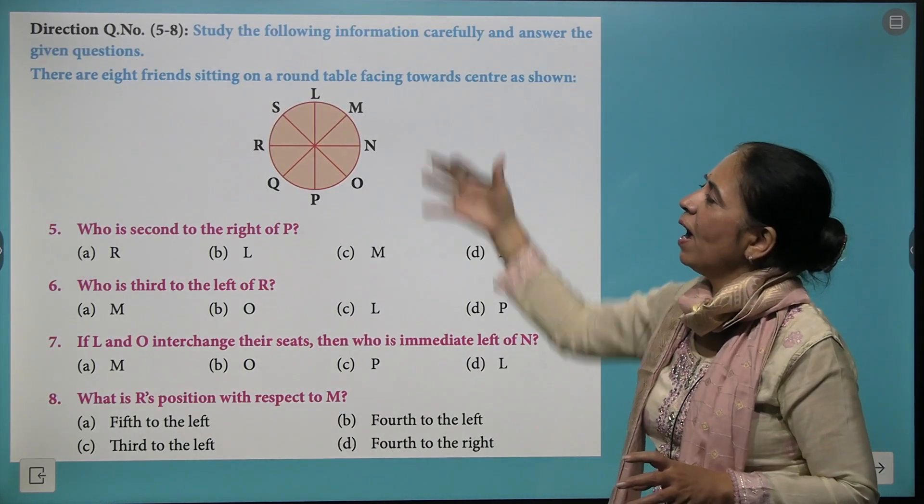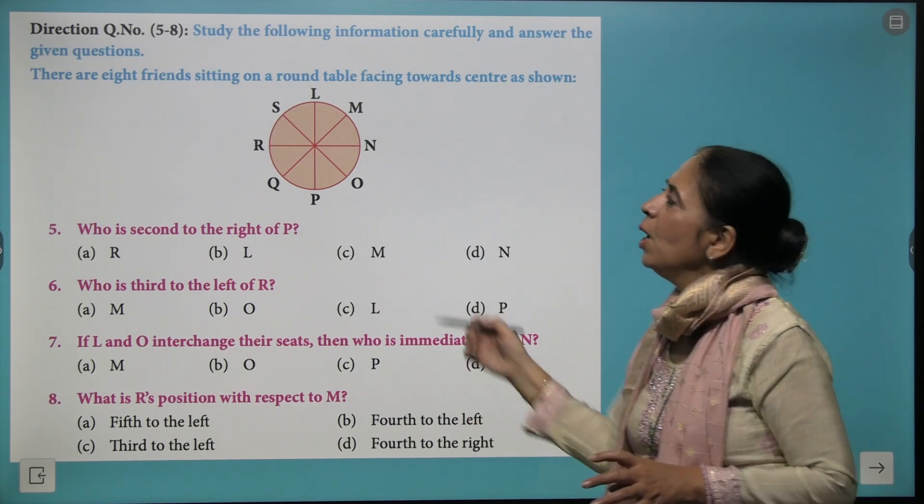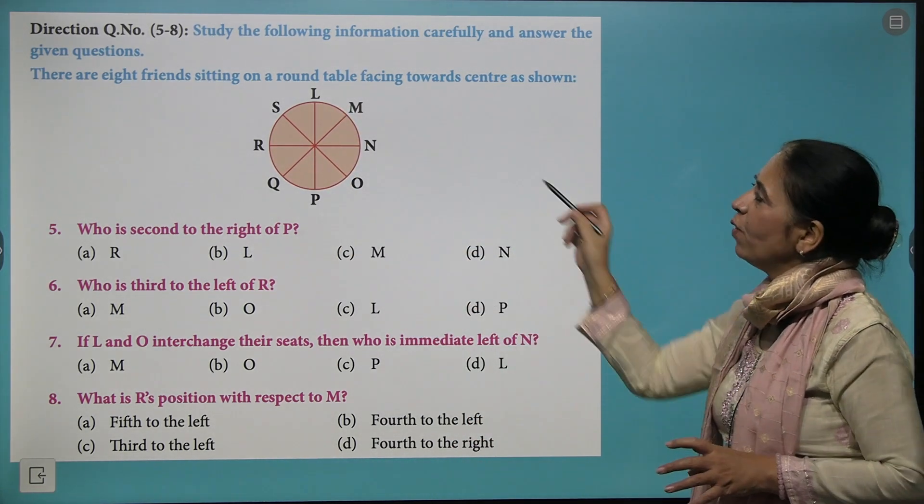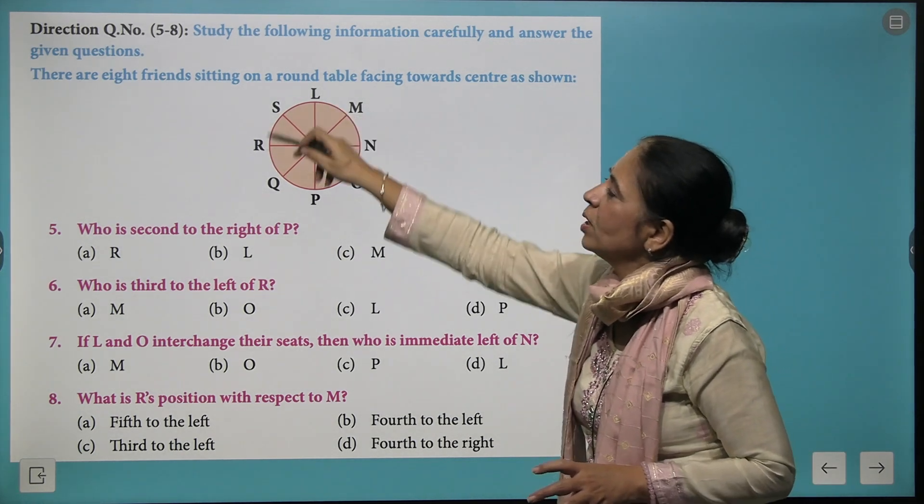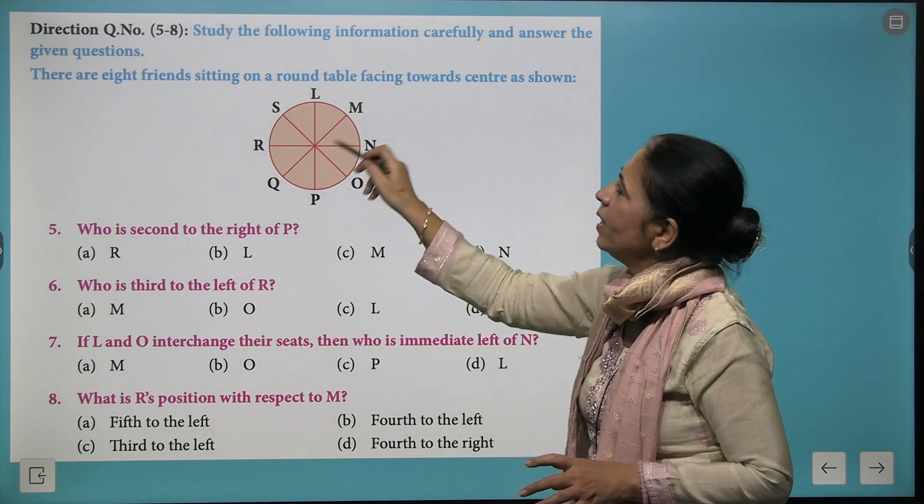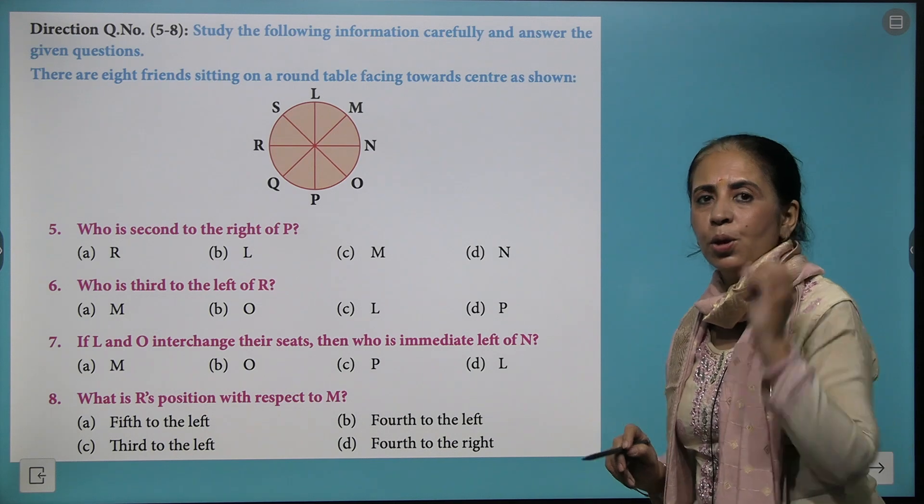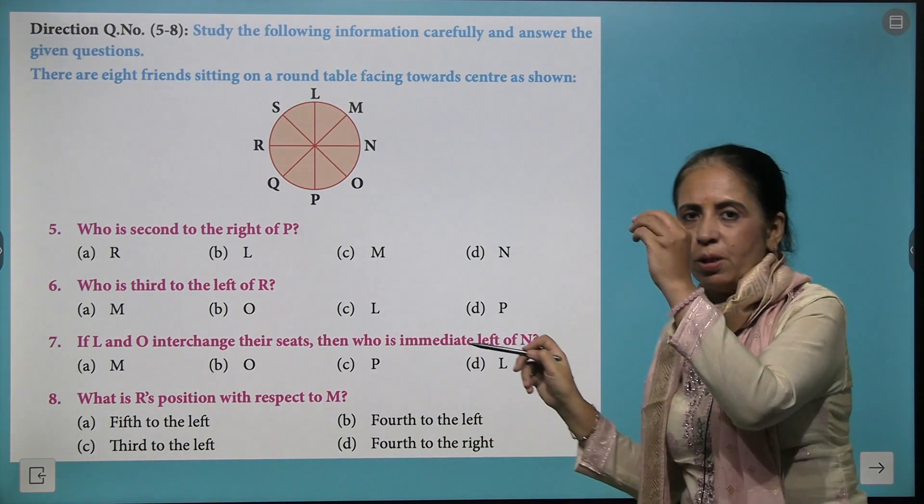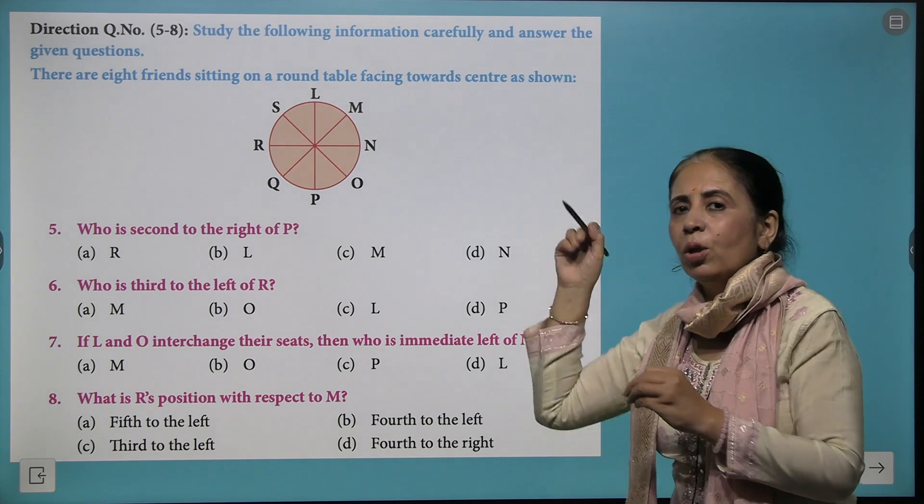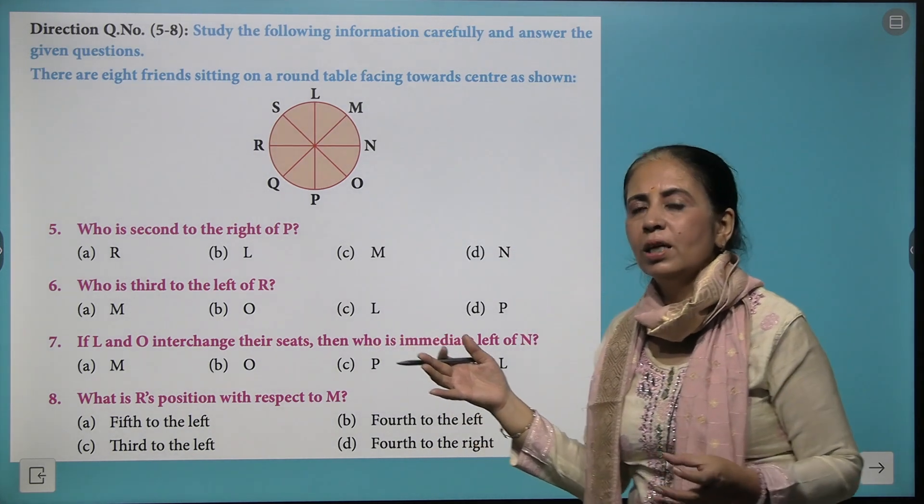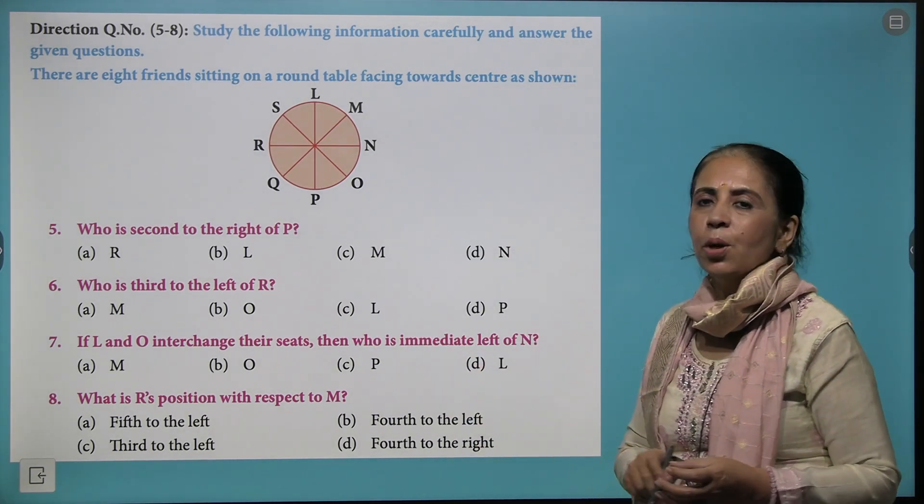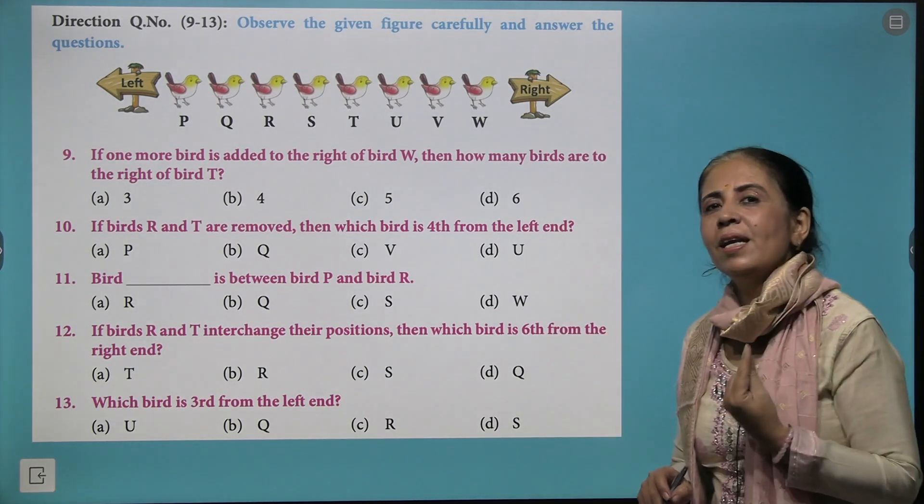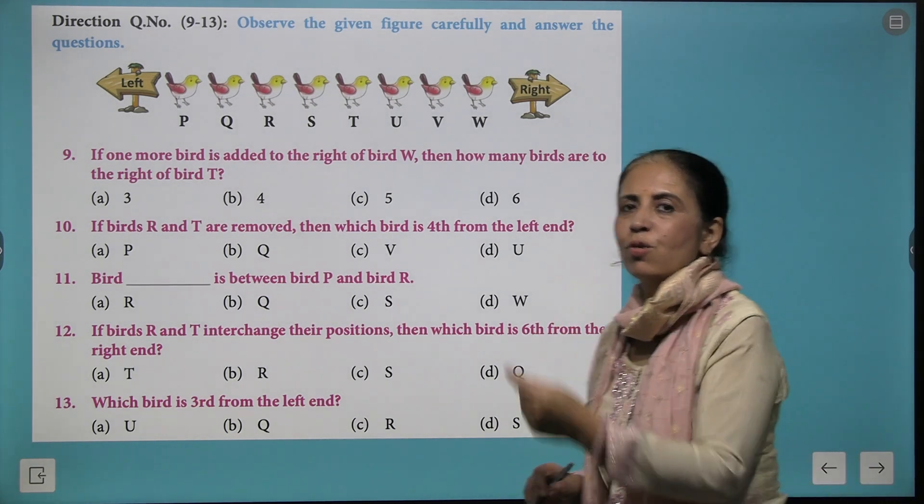Again, we have another variety of question where eight friends are sitting on a round table facing towards the center. This is a table and everyone is facing towards the center. You need to find the position that on which position the particular person is sitting, on the right of one or on the left of another.